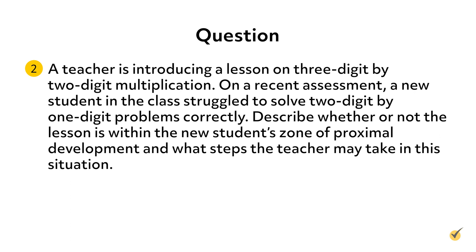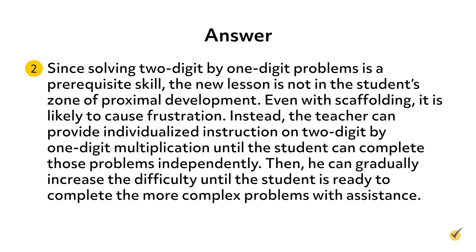Review Question 2: A teacher is introducing a lesson on 3-digit by 2-digit multiplication. On a recent assessment, a new student in the class struggled to solve 2-digit by 1-digit problems correctly. Describe whether or not the lesson is within the new student's Zone of Proximal Development and what steps the teacher may take. Since solving 2-digit by 1-digit problems is a prerequisite skill, the new lesson is not in the student's zone of proximal development — even with scaffolding, it is likely to cause frustration. Instead, the teacher can provide individualized instruction on 2-digit by 1-digit multiplication until the student can complete those problems independently, then gradually increase the difficulty until the student is ready to complete the more complex problems with assistance.